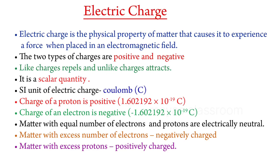Electric charge is a scalar property. The unit of electric charge is important — it is represented by capital C, which stands for Coulomb. A proton has a charge of positive 1.602 times 10 raised to minus 19 Coulombs, and an electron has a charge of negative 1.602 times 10 raised to minus 19 Coulombs.